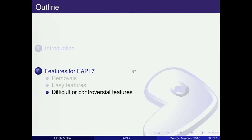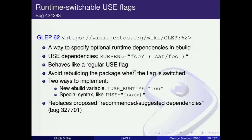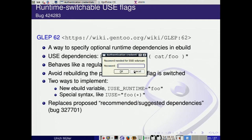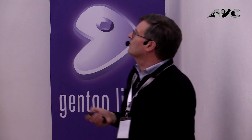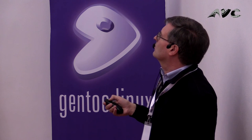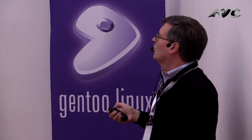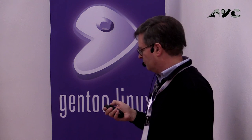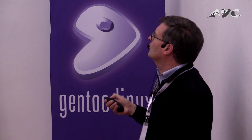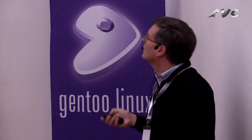Now the more difficult or controversial stuff. There should be some way to switch USE flags at runtime and avoid rebuilding the package when you switch that flag. The details are specified in a GLEP. It's not entirely clear what the syntax will be — probably something like parentheses with a star. It's a substitute for the proposed recommended or suggested dependencies, and there's another bug for that one.